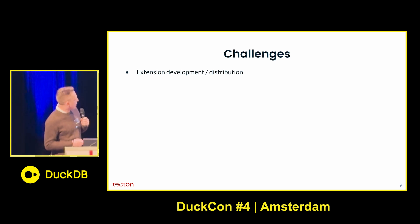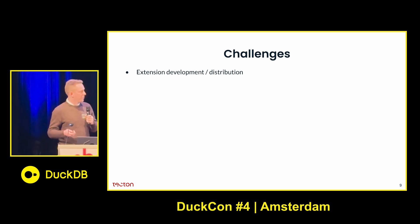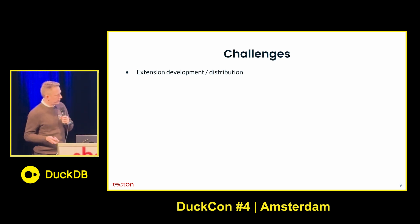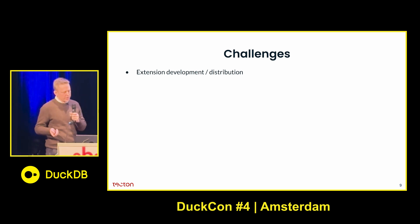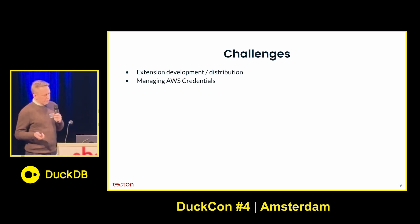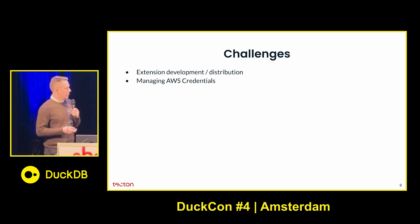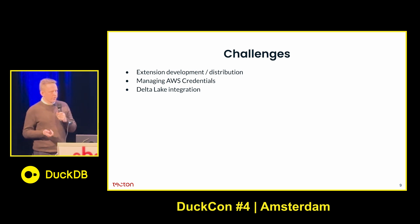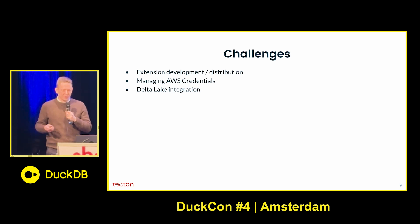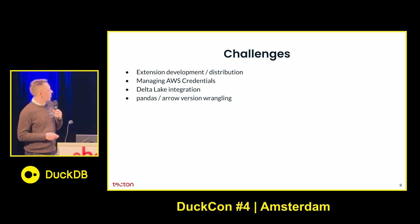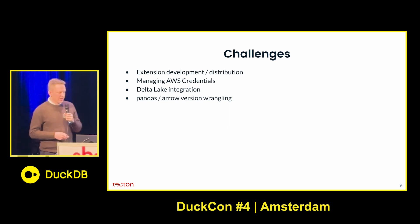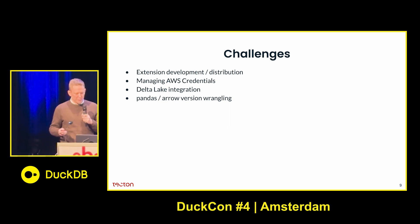That doesn't mean there haven't been challenges. We had to build an extension to handle some aggregations that aren't built in natively to DuckDB — that was a little challenging. Managing AWS credentials has become harder when people are running things on their laptop instead of a shared notebook cluster. The Delta Lake integration was a little rough, though it looks like improvements are coming. And making sure everything works with different versions of Pandas and Arrow has been a bit of a challenge.